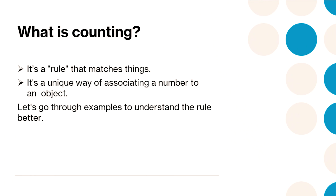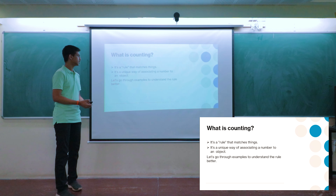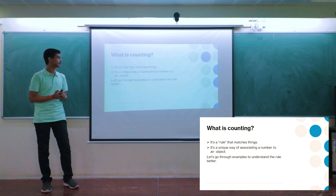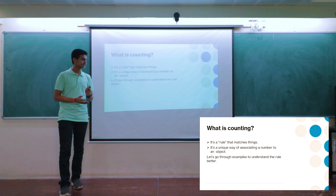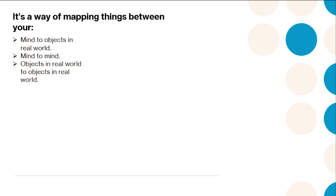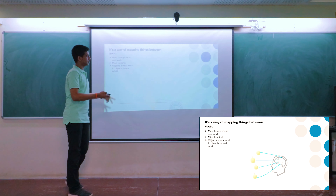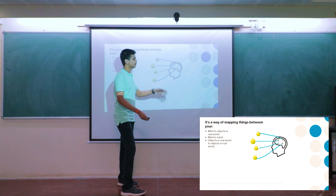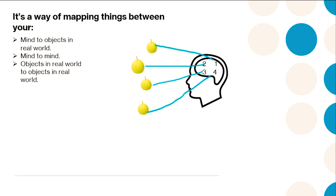Before we start, we should know what counting is. Counting is just a rule which we use to match things — it's a unique way of associating a number to an object. Counting is a way of mapping things. You map things from your mind to real objects in the world. You have four numbers in your mind and you map them to four objects — from one to one of them, second to another, and so on. You get to know there are four guavas.